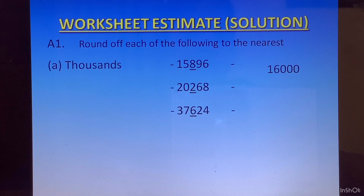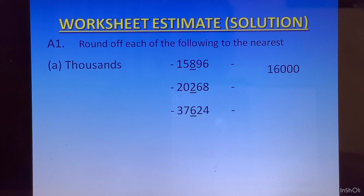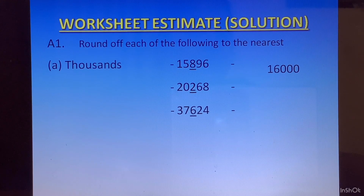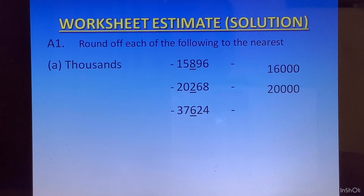The next number: we have 2 at the hundreds place. 2 is less than 5, so we will not change the digit at the thousands place. Whatever is on the right of the thousands place — that is the hundreds, tens, and ones place — we will convert those to 0. The answer would be 20000.